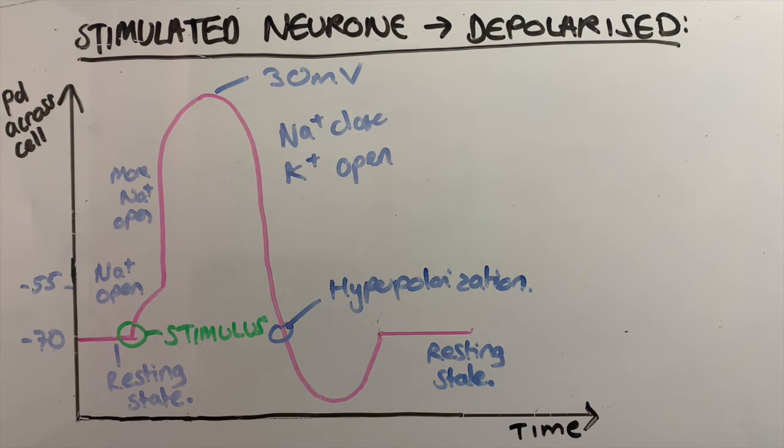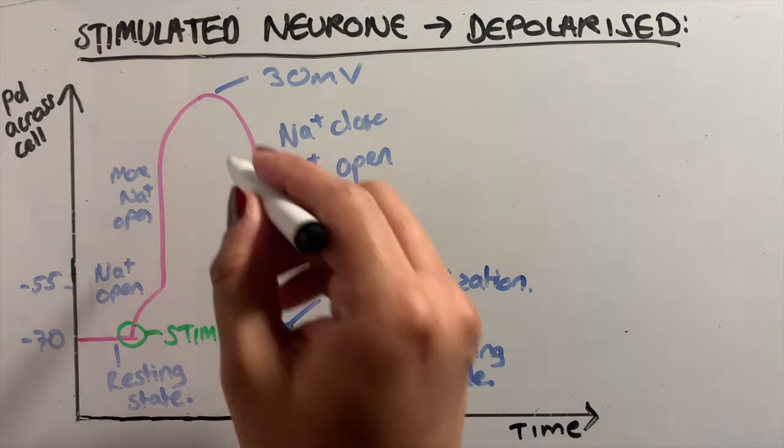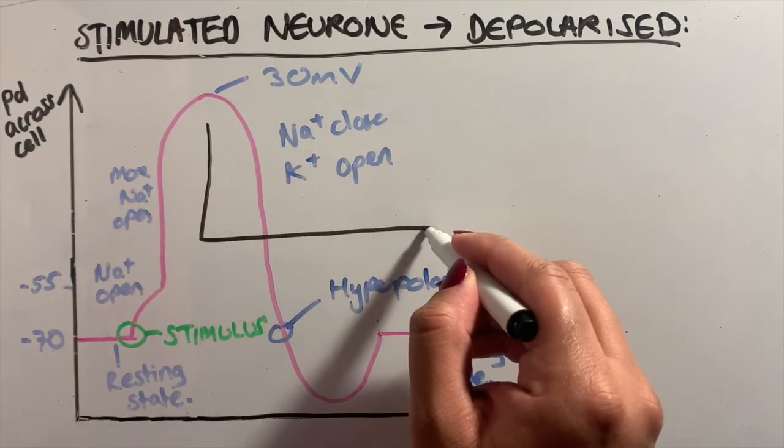So the little dip you see in the graph is known as hyperpolarization. This is when potassium channels are slow to close, so there is a slight overshoot where there are too many potassium ions diffusing out of the neuron. This causes the potential difference to become more negative than the resting potential, dropping lower than minus 70 millivolts. However, this is compensated quickly, and then the resting period is established again.